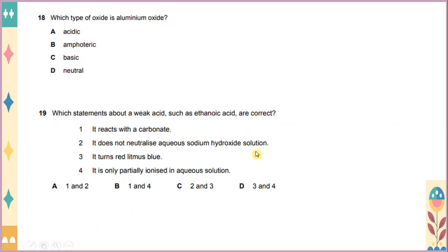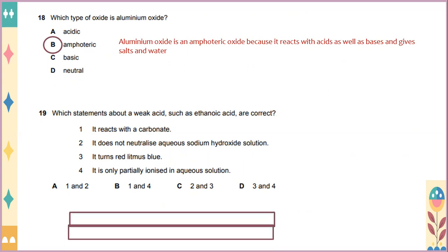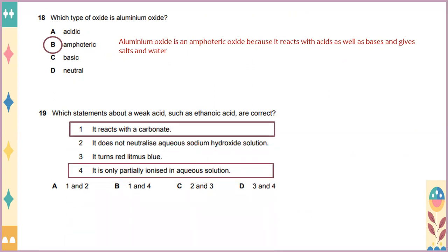Which type of oxide is aluminum oxide? Aluminum oxide is an amphoteric oxide because it reacts with acid as well as bases and gives salt and water. So the answer will be amphoteric. Which statement about a weak acid such as ethanoic acid is correct? It reacts with carbonate. Yes. It does not neutralize? Of course sodium hydroxide solution. Not correct. And it turns red litmus blue. It is also not correct. And it is only partially ionized in aqueous solution. So the most suitable answer will be 1 and 4.